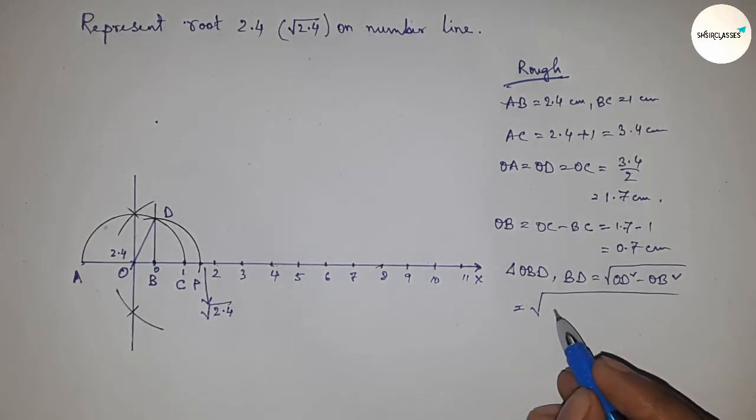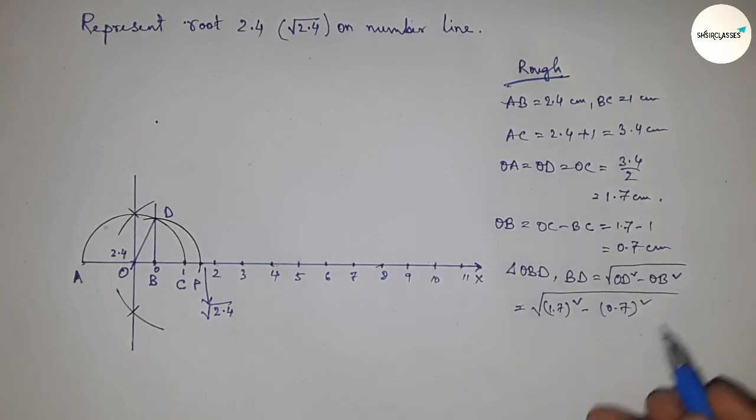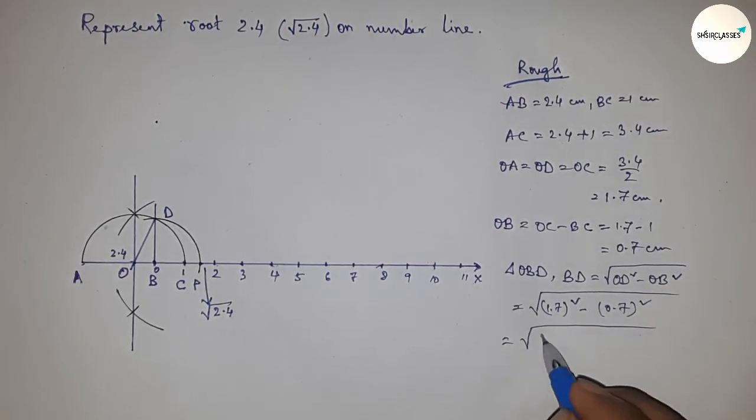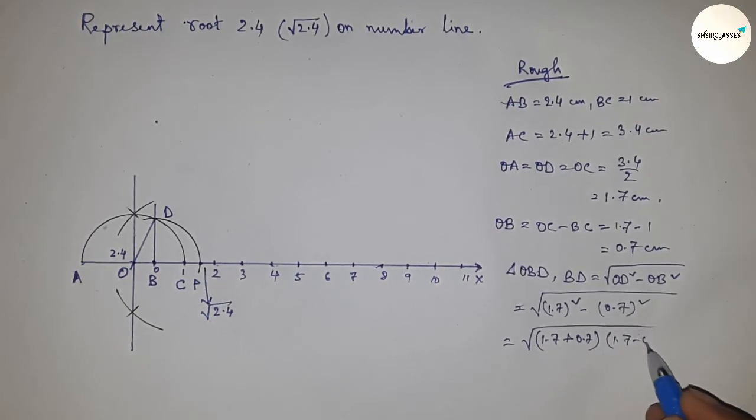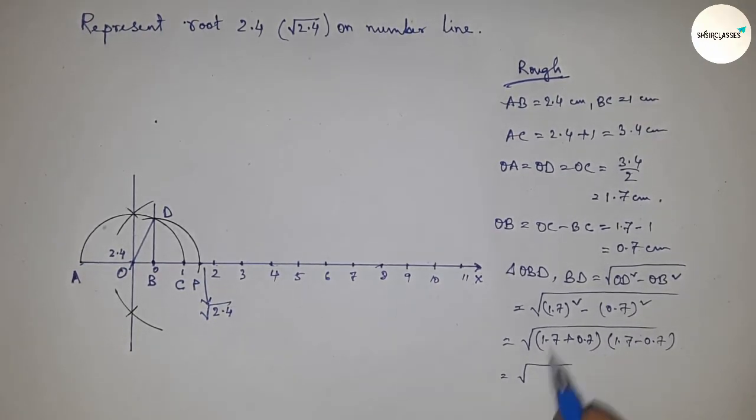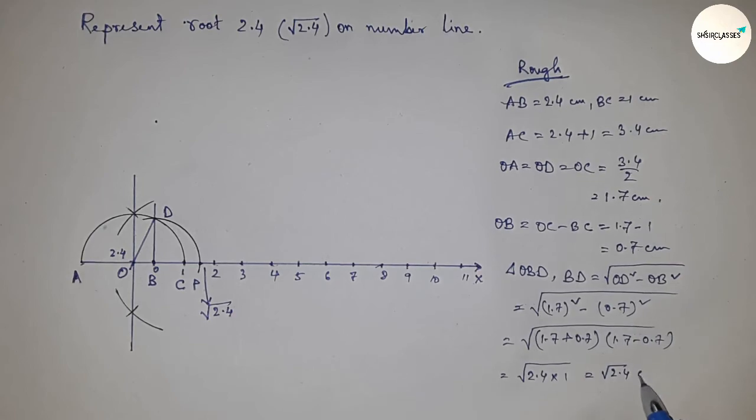Putting the values, OD equals 1.7 and OB equals 0.7. Applying the formula a squared minus b squared equals (a plus b)(a minus b), we get root of 2.4 times 1, which equals root 2.4 centimeters.